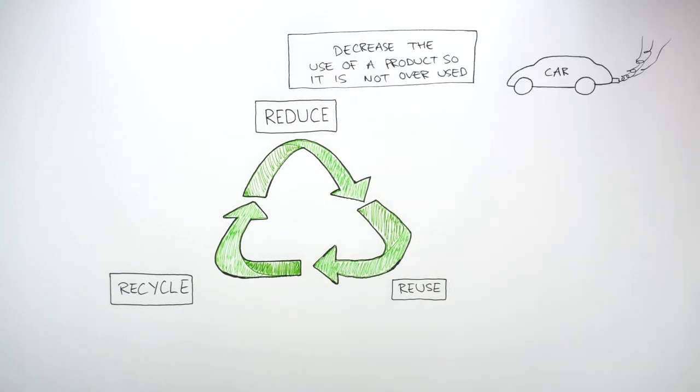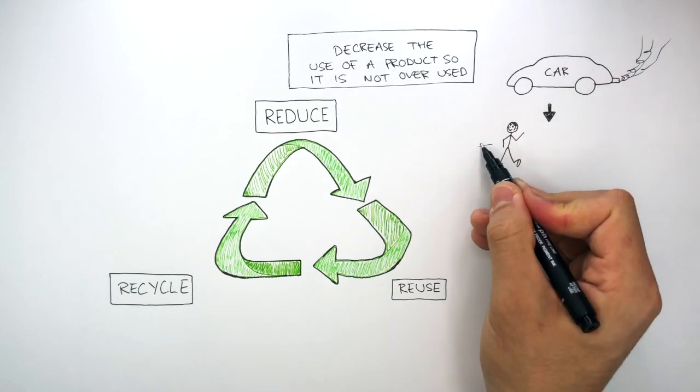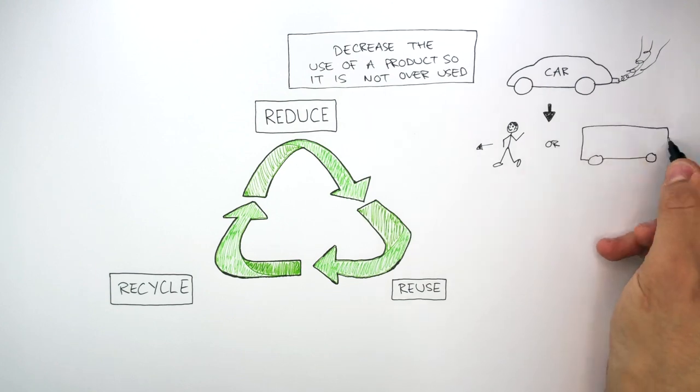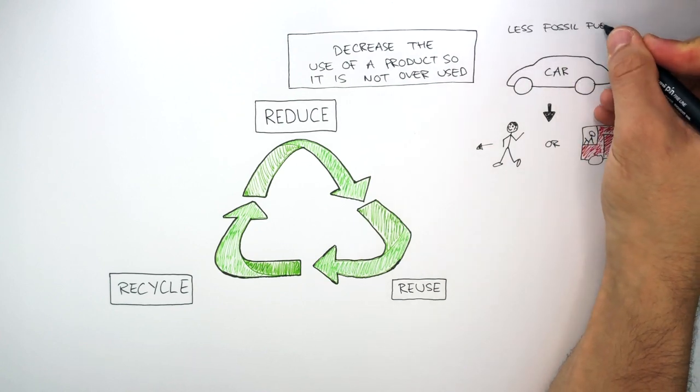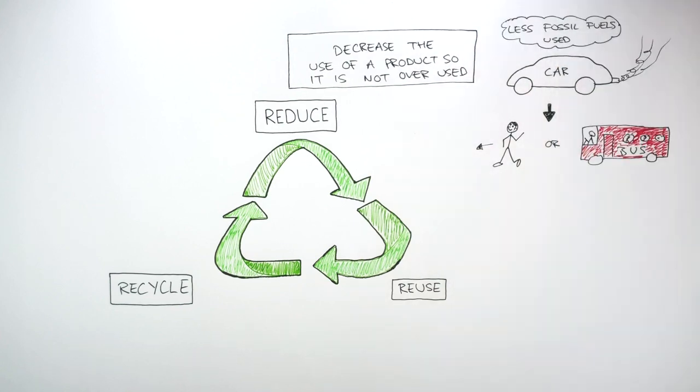For example, we use cars too much. So to reduce the use of cars, we could either walk or many people could take the same vehicle in the form of a bus for example. This means less fossil fuels would be used if everyone reduced their dependency on cars.